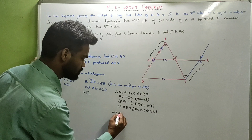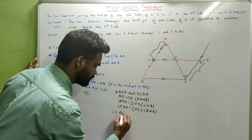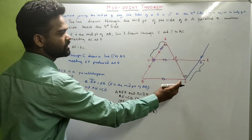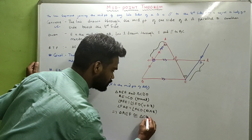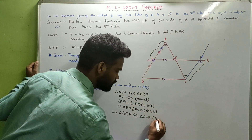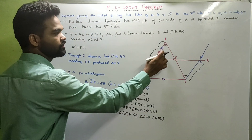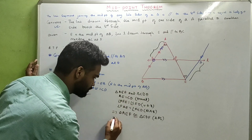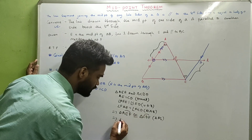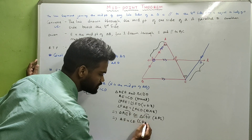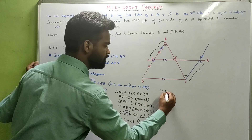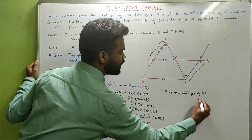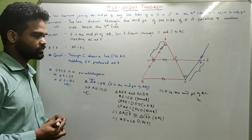If these two triangles are congruent, their corresponding parts are equal. Which means AF equals CF, by CPCT. Which implies F is the midpoint of AC. And this is what we were supposed to prove. Done.